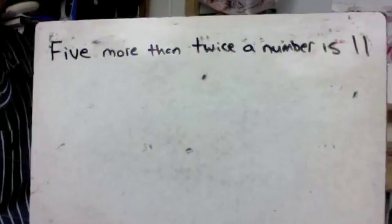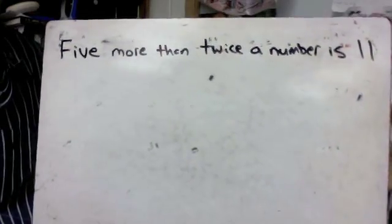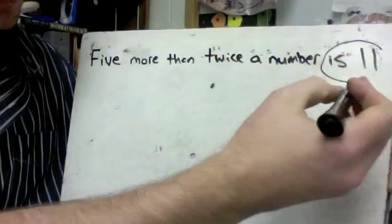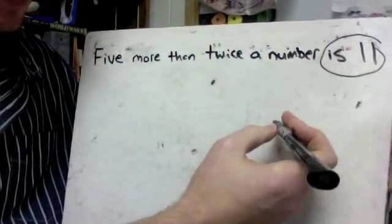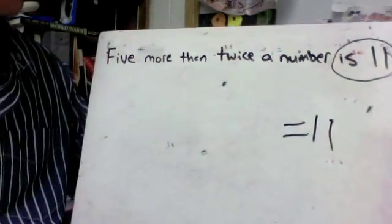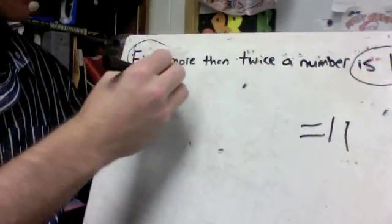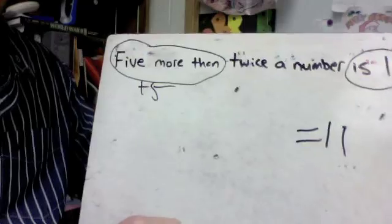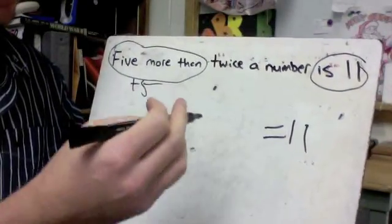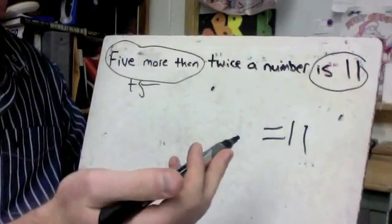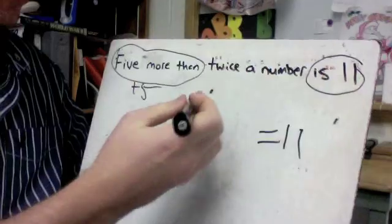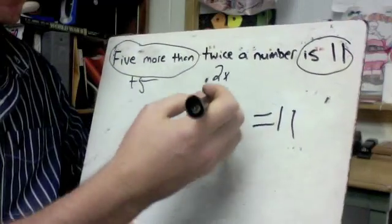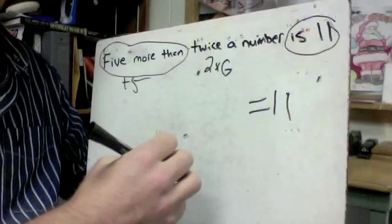This one has a couple of different parts in it. Five more than twice a number is 11. So let's get this part first is 11. That's always the easiest part to pick out. That's just equals 11. Five more than would mean that we're going to have a plus five in there somewhere. Twice a number, remember a number would be like a variable and twice that much. So it's going to be two times whatever we choose for our letter. So in this case, maybe I'll just say it's G.